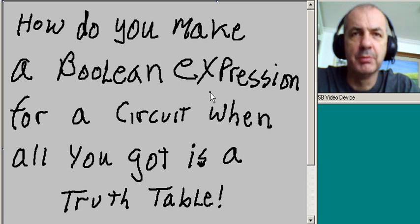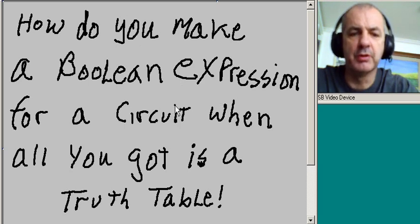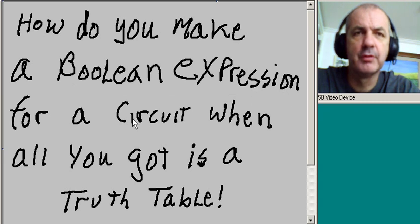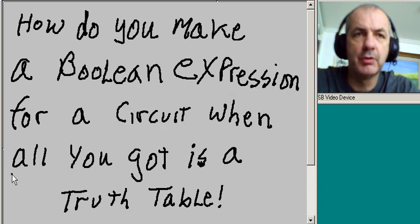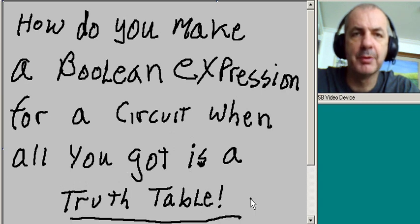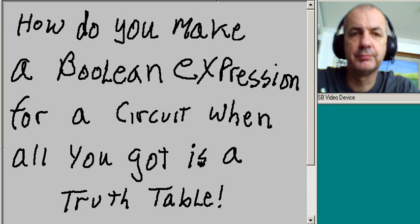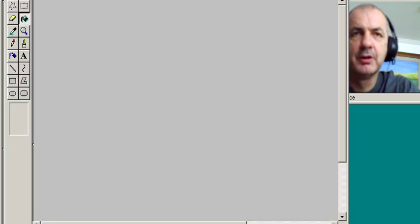So, how do you make a Boolean expression for a circuit when all you got is a truth table? How do you do that? Well, there's only one way to really find out. Let's make a truth table.